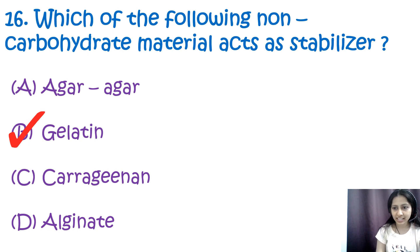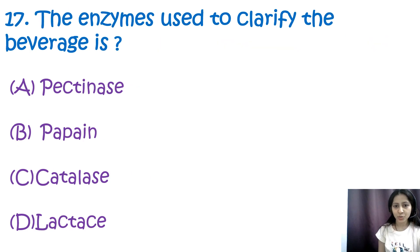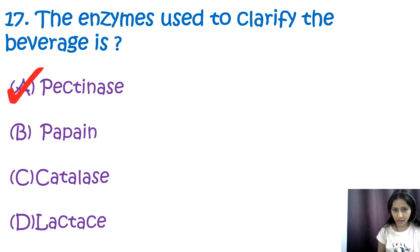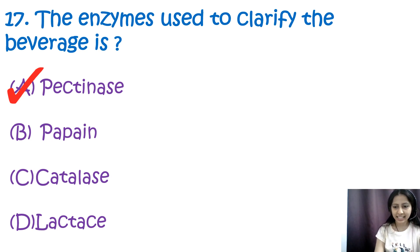Question 17: The enzyme used to clarify beverages is — options are pectinase, papain, catalase, and lactase. The correct answer is A, pectinase. Pectinases are enzymes used to clarify beverages. They break down pectin, a polysaccharide found in plant cell walls, which helps in clarification of the beverage by reducing cloudiness caused by fruit pulp.